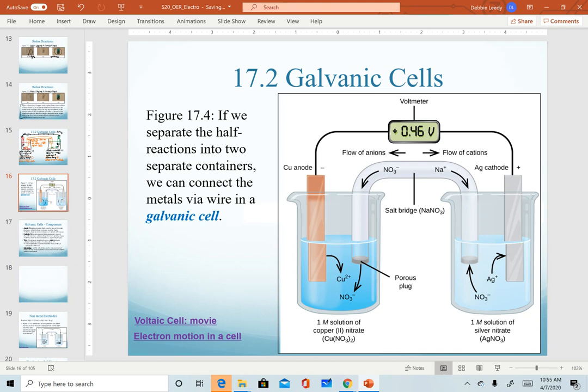All right, for the prettier version, this is the drawing that is generated from the textbook that will describe all of the movement of everything in the copper and silver galvanic cell.